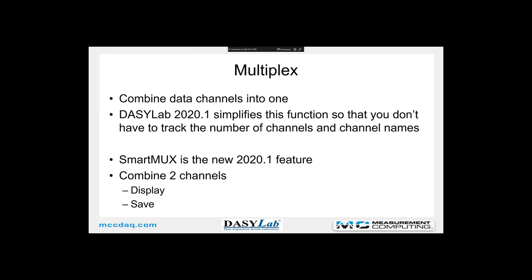Multiplexing allows you to take multiple data channels and combine them into one. We made a huge change in DaisyLab 2020 Service Pack 1 that simplifies the function so you don't have to track the number of channels you multiplex or the channel names. Smart Mux is the name of the feature. We'll do an example combining two channels using both Smart Mux and the original multiplex by value or multiplex by block to compare how the feature works.